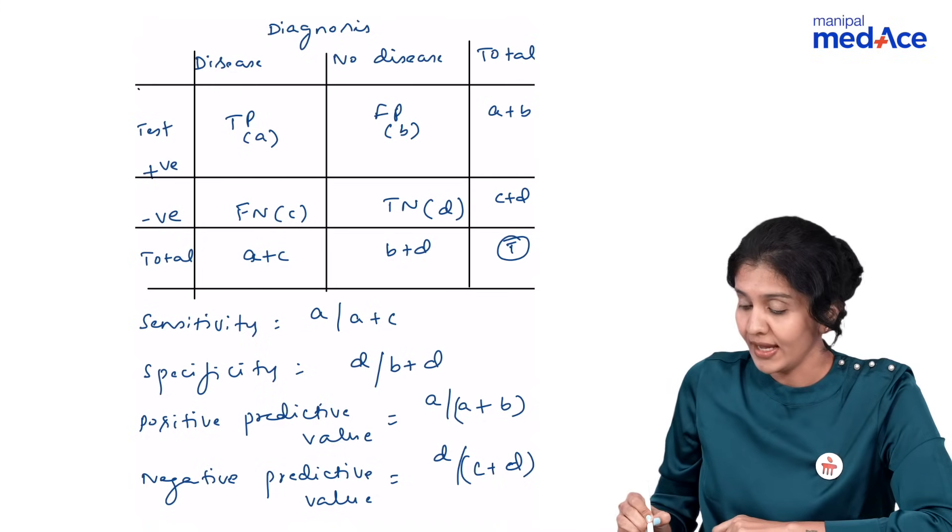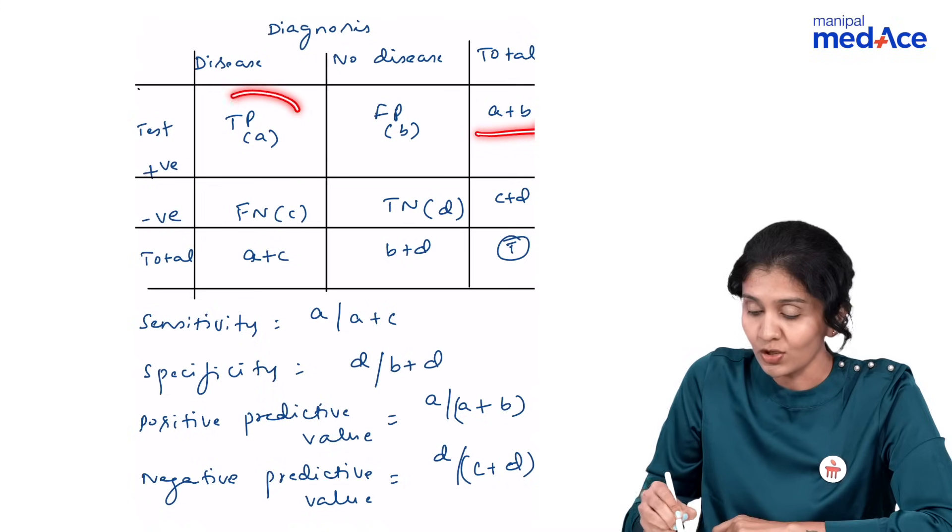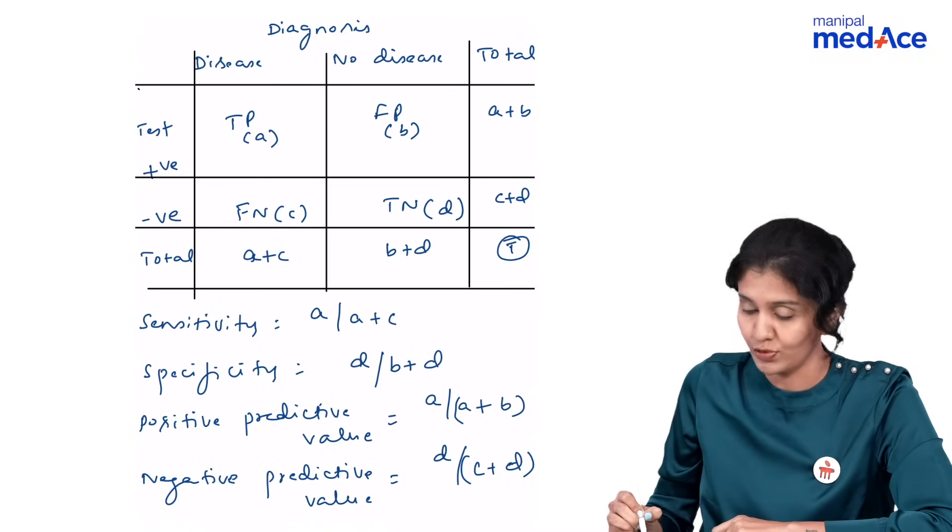What is positive predictive value? A divided by A plus B. That is out of total positives, how many are truly positives? That is positive predictive value.